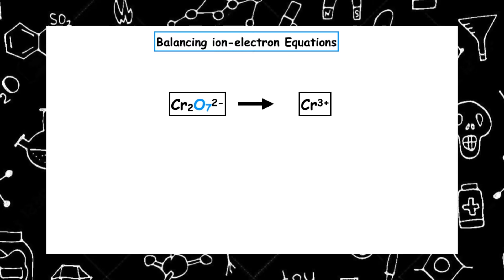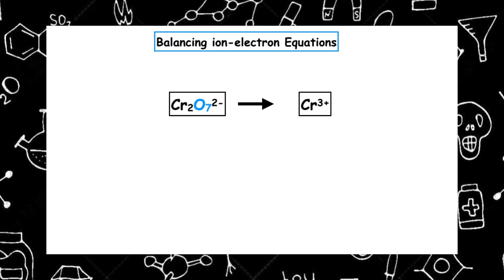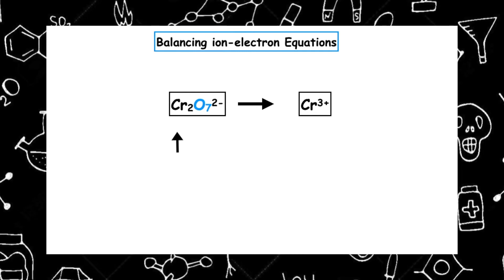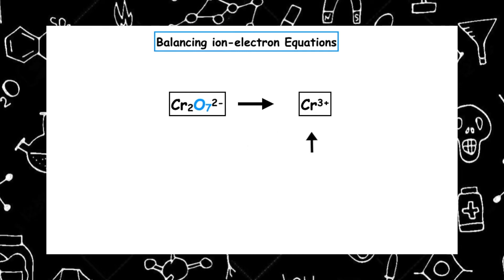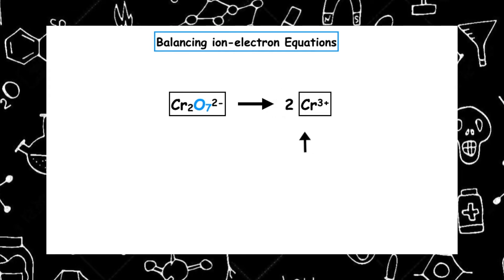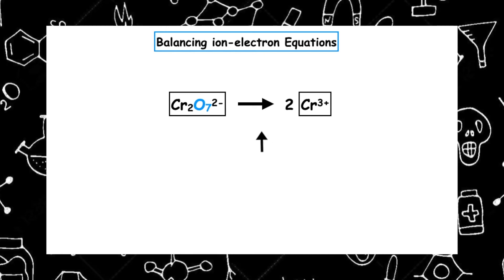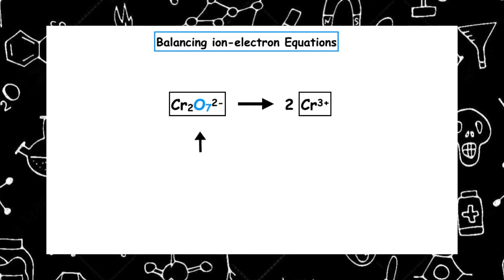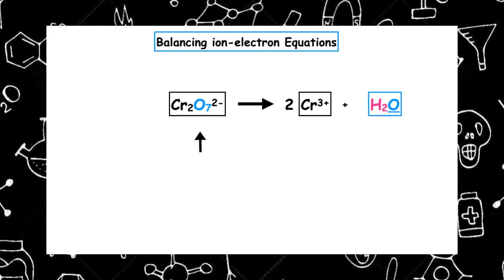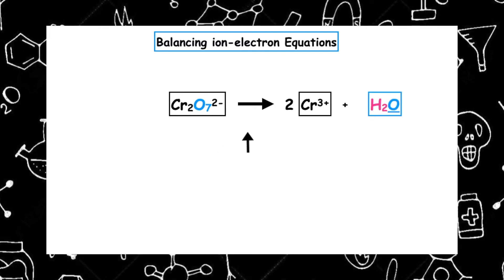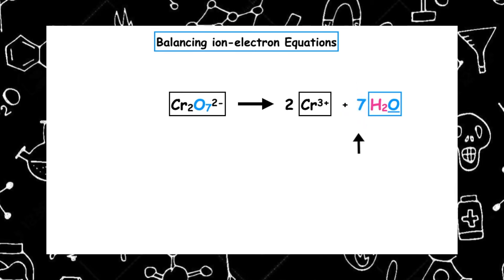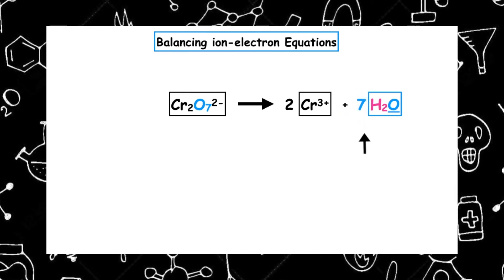The first thing we want to do is balance the elements that are not oxygen or hydrogen. On the left-hand side I've got two Crs, and on the right-hand side I've got one, so I have to put a two outside the box on the right-hand side. Now that the chromiums are balanced, I can look at my oxygens. On the left I've got seven oxygens; on the right I've got no oxygen, so I have to add water molecules. Because I've got seven oxygens on the left, I've got to have seven water molecules to balance those out.